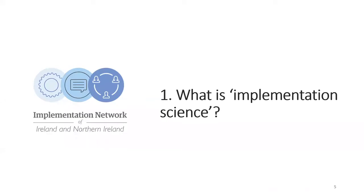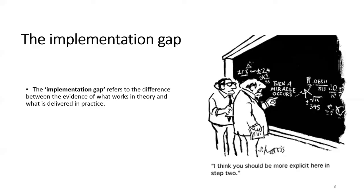So what is implementation science? We have a growing body of evidence and knowledge about what works, informed by research and practice. However, the outcomes for people using services have not improved in line with advances in knowledge. This is sometimes called the implementation gap — the difference between what we know works in theory and what actually happens in practice. Implementation is all about translation of evidence into practice. You will learn how to bridge the implementation gap using implementation strategies.